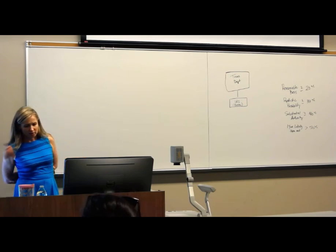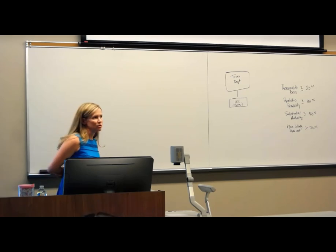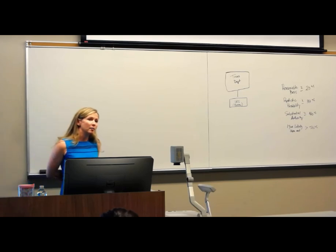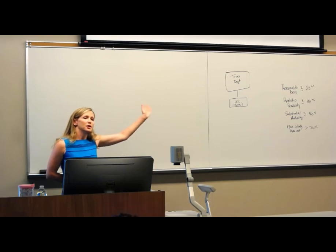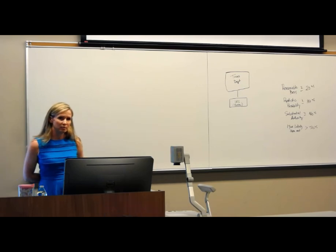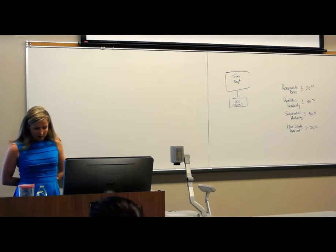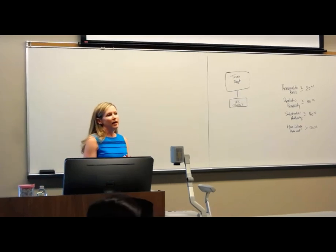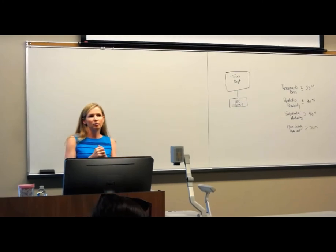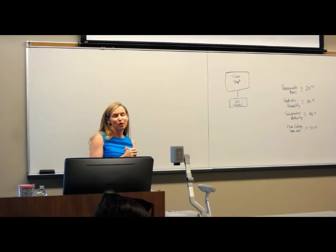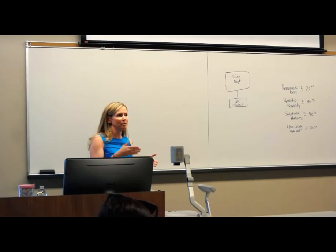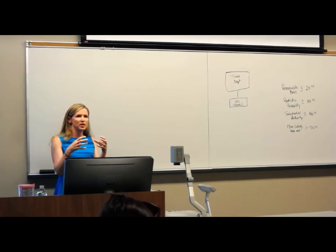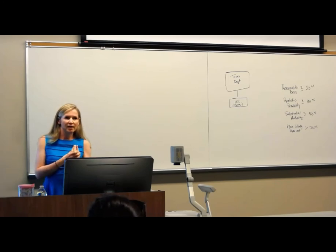Also coming out of the administrative branch are what are called revenue rulings and revenue procedures. These are issued by the IRS, not from the Treasury Department — regulations come from Treasury, everything else we're about to talk about comes from the IRS. Revenue rulings take specific factual situations and discuss them in more detail. For example, taxpayers are having a hard time determining when they're allowed to take a mileage allowance — commuting from home to a first office, going to a second job. They're going to take a very specific situation and talk about it in detail. That's what a revenue ruling is.